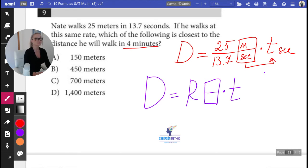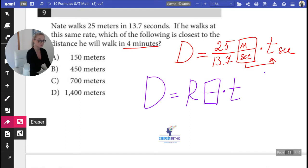They're asking you about four minutes. How many seconds are in four minutes? 60 times four—240. So we multiply by 240.